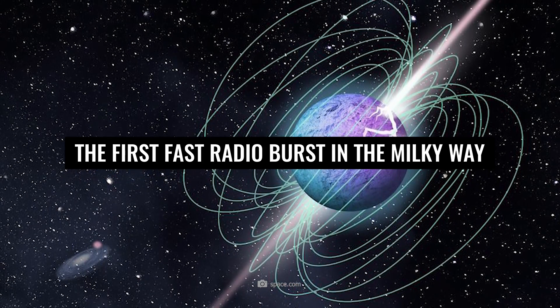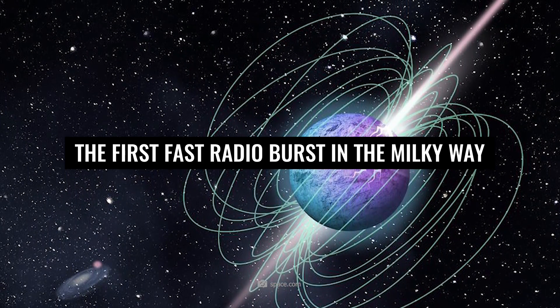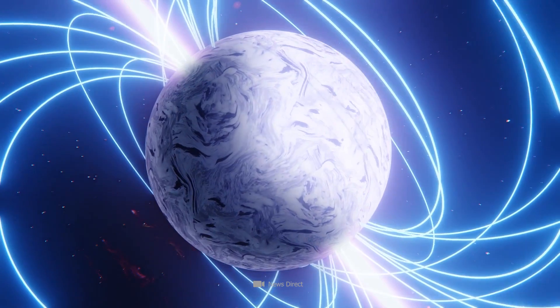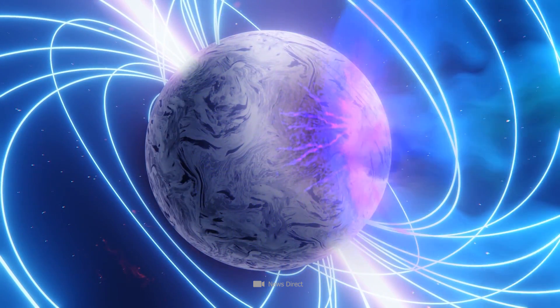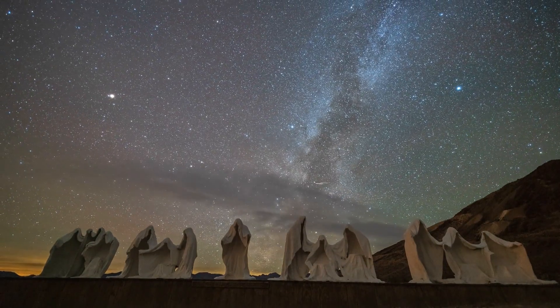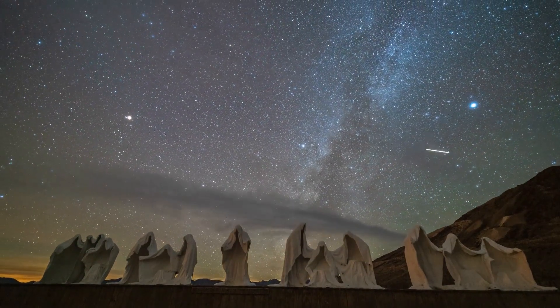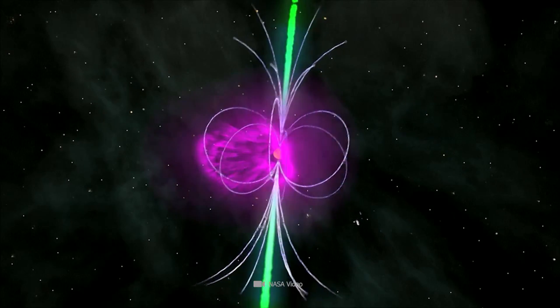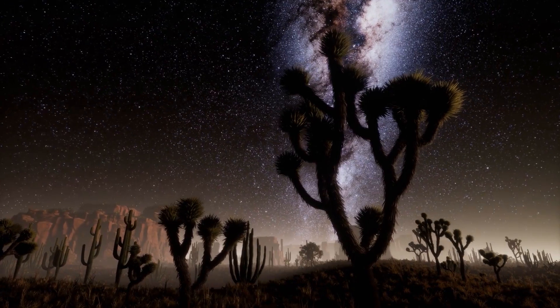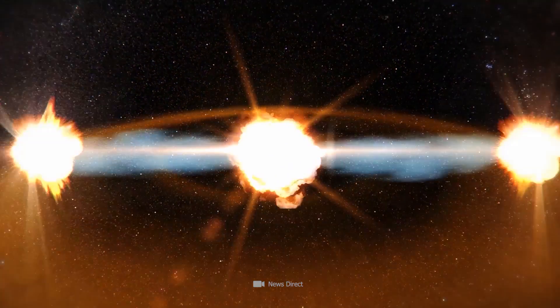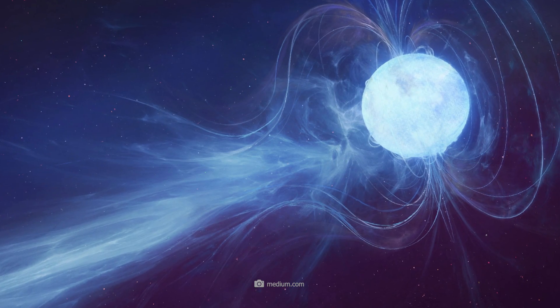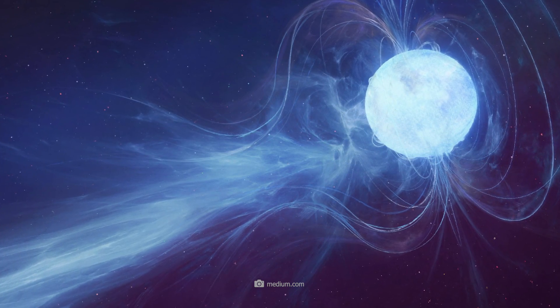The thesis that magnetars represent the birthplace of fast radio bursts is supported, meanwhile, by a discovery astronomers registered in our Milky Way within the past year. The phenomenon was the first fast radio burst ever detected in our home galaxy. The source of the emission was the magnetar named SGR 1935 plus 2154.